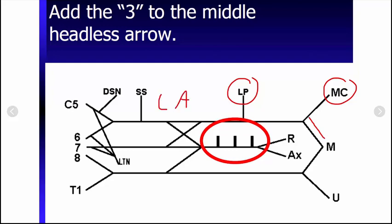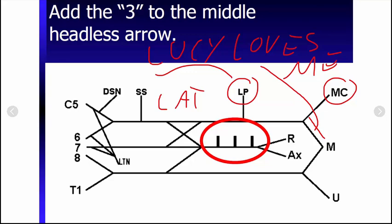Because this here is your lateral cord. So you could use the mnemonic, Lucy loves me. Lucy loves me actually stands for Lucy stands for lateral pectoral, loves stands for the medial contribution, sorry, the lateral contribution to the median nerve, and me stands for the musculocutaneous nerve.